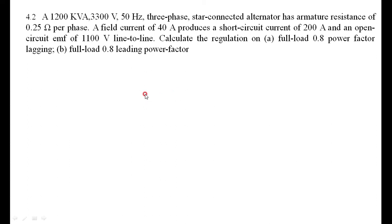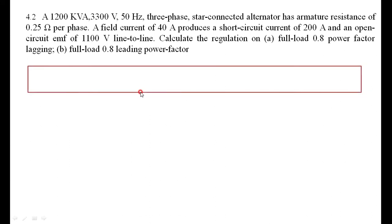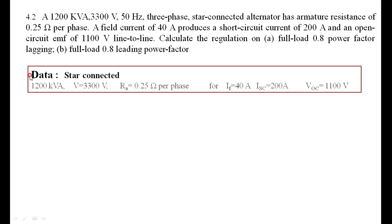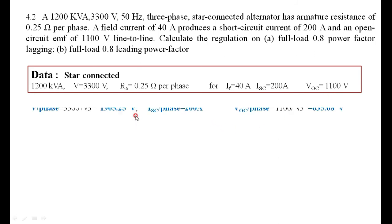We will work out the lagging power factor case. Listing out the given data: star connected, 1200 kVA, 3300 V, Ra = 0.25 Ω, IF = 40 A, ISC = 200 A, VOC = 1100 V (line). All line values must be converted to per-phase values.